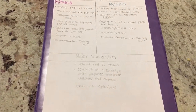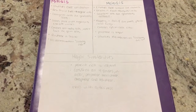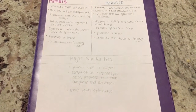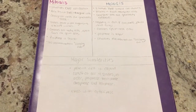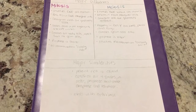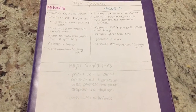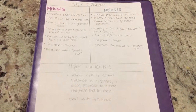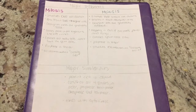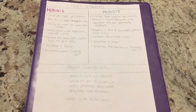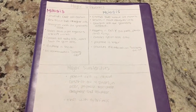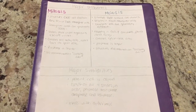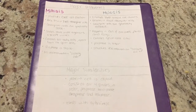Major similarities between the two: parent cells are diploid. Both mitosis and meiosis consist of four stages in order of prophase, metaphase, anaphase, and telophase, and both processes end with cytokinesis.